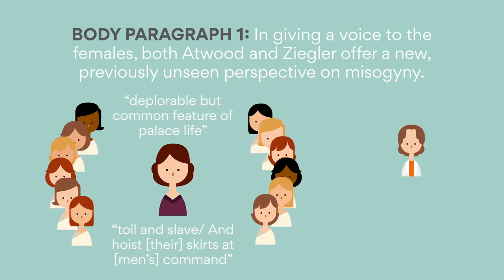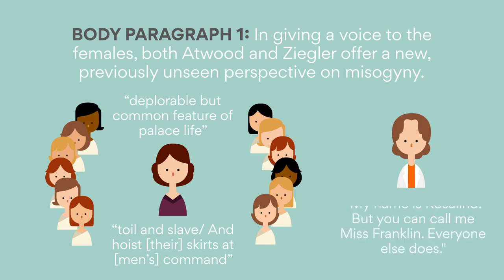Likewise, Rosalind Franklin's version of events has never been revealed because of her early death. In Photograph 51, however, we learn of the misogyny Rosalind faces as a female scientist. As she states: 'My name is Rosalind, but you can call me Miss Franklin. Everyone else does.'